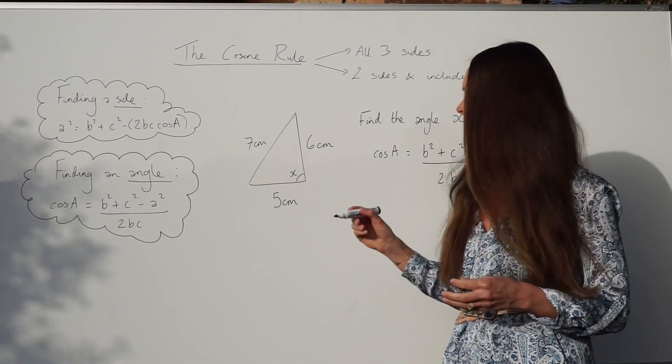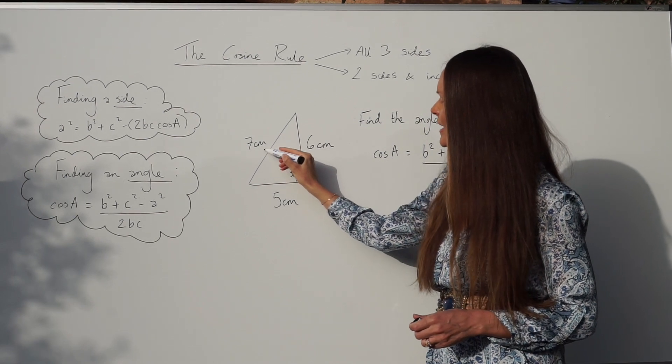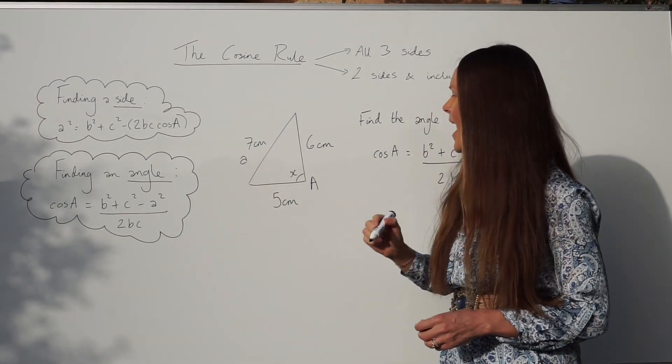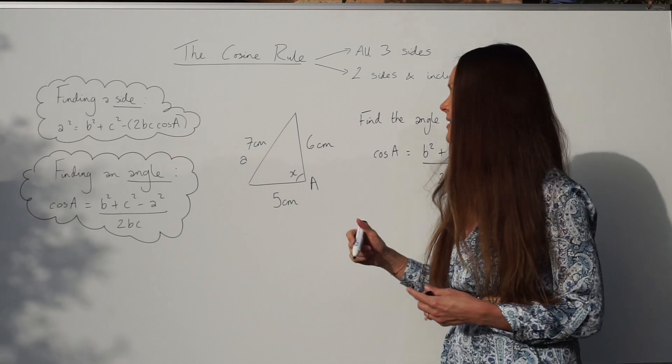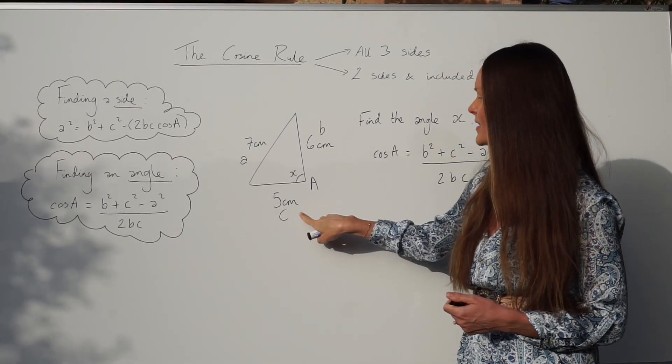Okay, so label the sides and label the angle. Remember the angle we label as capital A, which means the side opposite here is little a. And then when we label the sides B and C, it doesn't matter which round you label those. I'm going to label this one B and this one C.